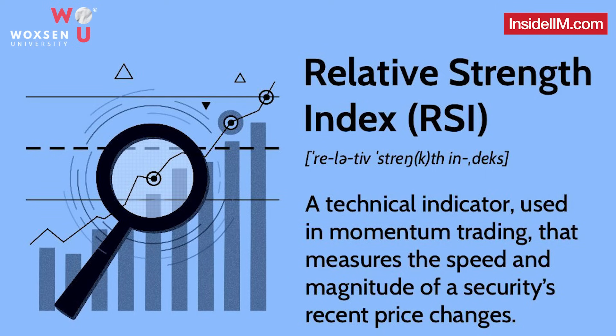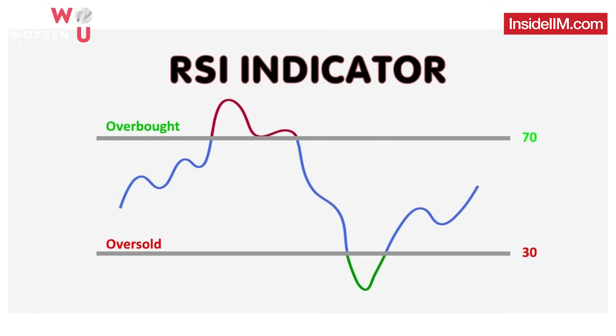We mainly discuss RSI, which is a momentum oscillator. In simple terms, it considers stock price momentum in the market — whether a stock is overbought or oversold. The key metric is 70 and 30. If RSI reaches 70, it is overbought; if it reaches 30, it is oversold. That indicates a selling opportunity and a buying opportunity respectively.